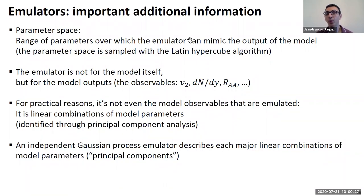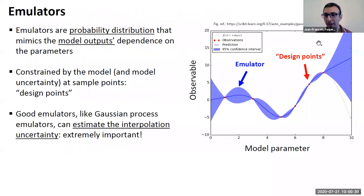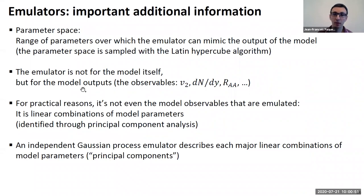Now, what you'll do is you'll evaluate your model at each one of these parameter points. And then you will train the emulators on the output of the model. So training the emulator means that you're essentially making the emulator learn what uncertainty it should have at each point, given your model outputs. Now, remember, we're not emulating the model itself. We're emulating the model observables. So the Gaussian process emulator is for V2, it's for dN/dy, it's for RA. It's not for the model itself, of course.